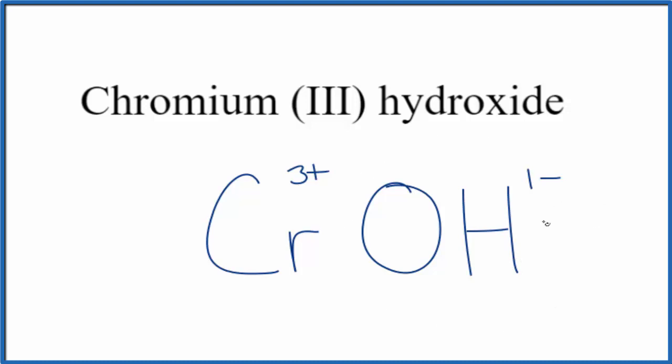So if we had three of these hydroxide ions, they're one minus, so if we put a three here, that would mean that we'd have a total charge of three minus. That would balance out the three plus. We'd have a net charge of zero. But because the three applies to the O and the H, we do need to put these parentheses around it.